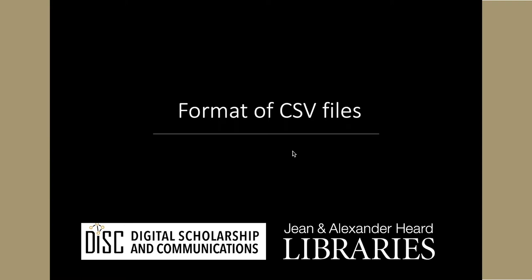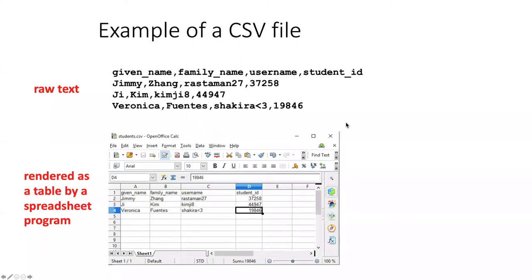Before we start working with CSV files, let's take a moment to talk about their format. CSV stands for Comma Separated Values. In each line of a CSV file, the values are separated by commas. So here we have four values: given name, family name, username, and student ID. Those are separated by commas and then separated from the next line of data by a newline character. This is similar to what we saw before when we had lists of items we could read in through iteration — each of the lines ends with a newline character so we can iterate through the CSV one line at a time.